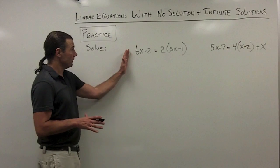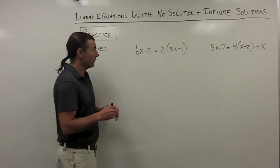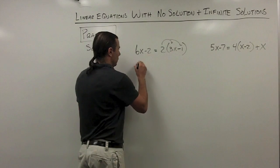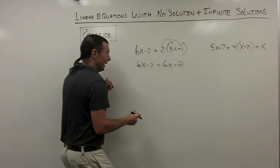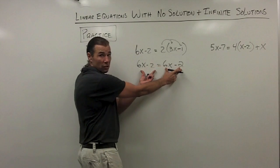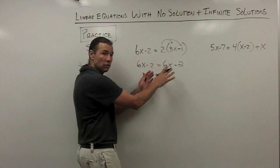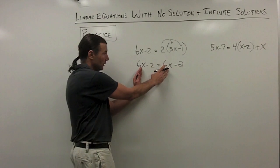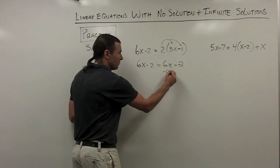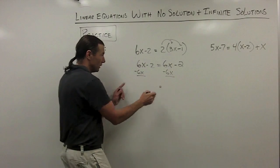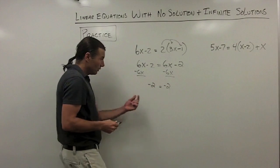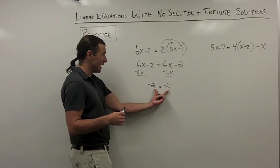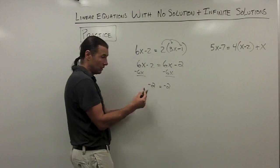For the first equation, I'll simplify the right side first by distributing, giving me 6x minus 2 equals 6x minus 2. Notice both sides of the equation are the same — this is an identity equation, and we're going to have an infinite number of solutions. If you didn't recognize that, we continue solving: subtract 6x from each side, the variable terms drop out entirely, and we're left with negative 2 equals negative 2 — a true statement. Variables dropped out, true statement: infinite solutions.